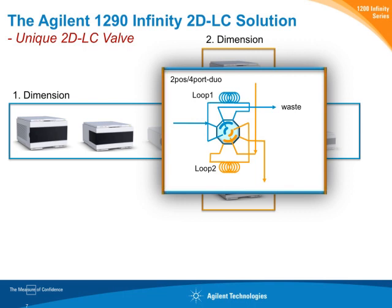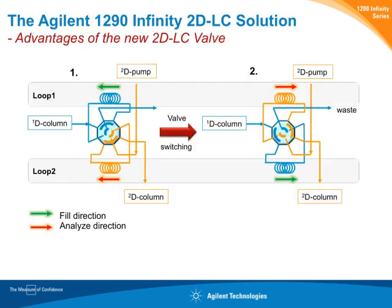Additionally, we developed a valve dedicated to the needs of two-dimensional chromatography, especially for comprehensive 2DLC. The valve is built from two concentric circles, which enable two equal flow paths. You can route flow in either the blue or the orange direction. When the two equal valves are used, the flow paths will be totally equal, giving you a significant advantage in the reproducibility of your results.